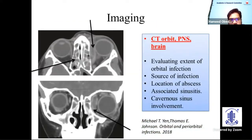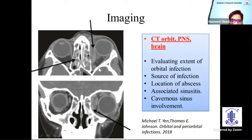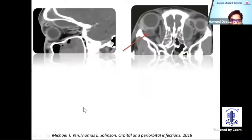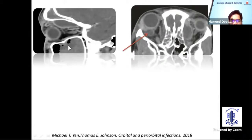We usually order a contrast-enhanced CT scan of the orbit, paranasal sinuses, and brain. It helps in evaluating the extent of orbital infection, the source of infection, location of abscess, associated sinusitis, and cavernous sinus involvement. As you can see, there is involvement of ethmoid sinusitis on both sides with a medial subperiosteal abscess in both images. Here you have a superior subperiosteal abscess along with frontal sinusitis. This image shows an intraorbital abscess.